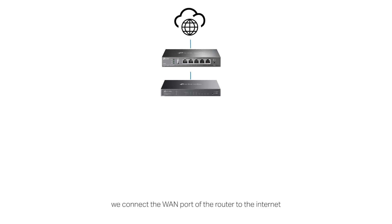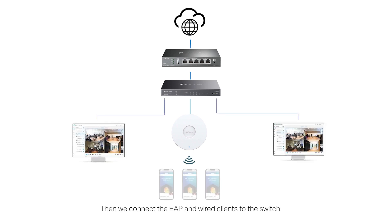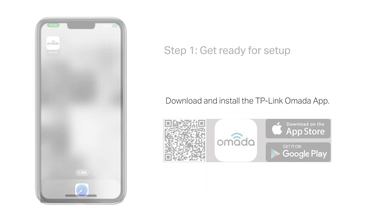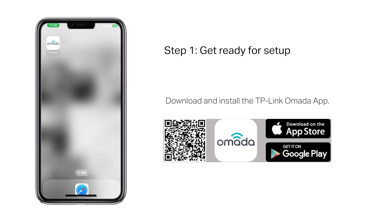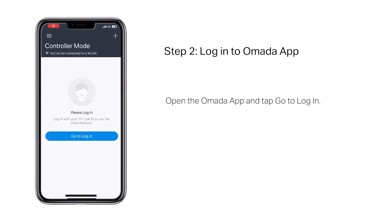Then we connect the EAP and wired clients to the switch. Download and install the TP-Link Omada app first, then log in to the Omada app.